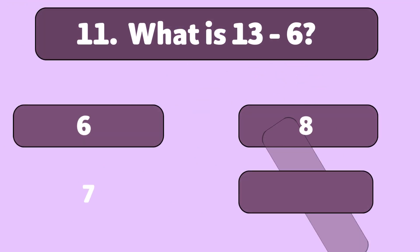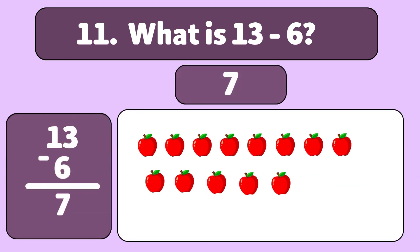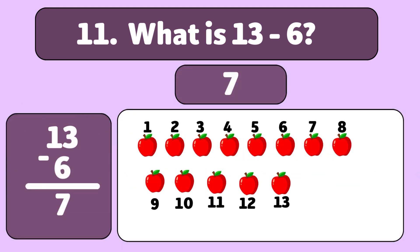What is 13 minus 6? The answer is 7. We start with 13 apples and take away 6. Let's count: 1, 2, 3, 4, 5.